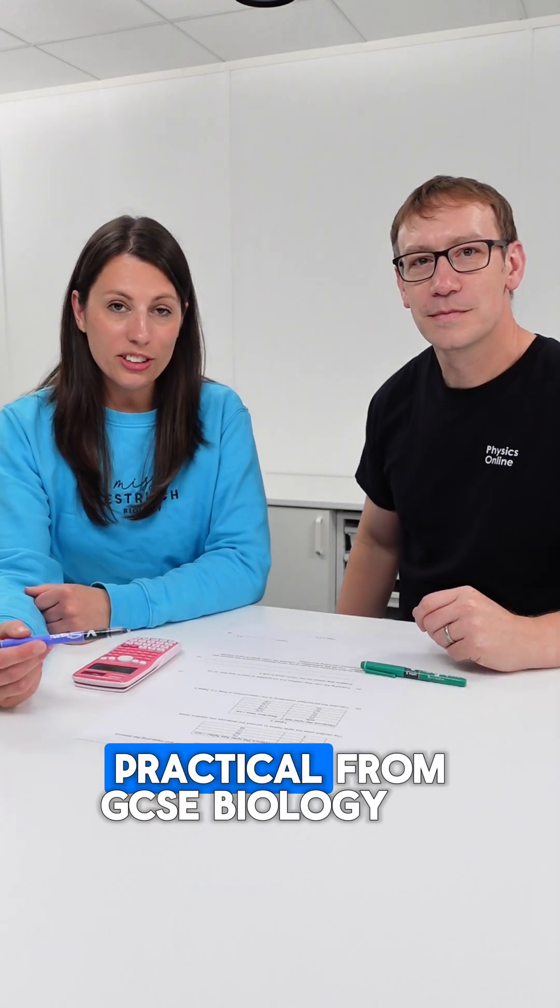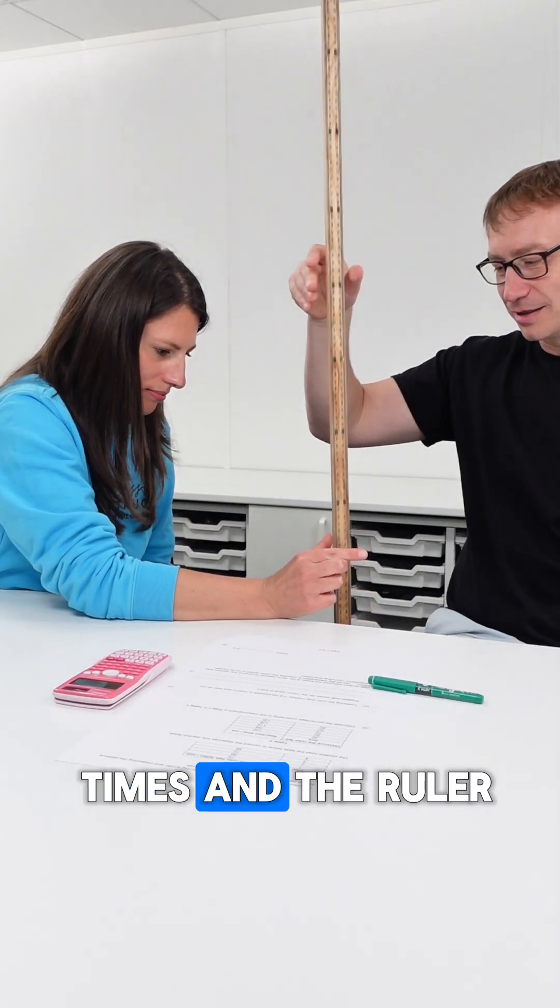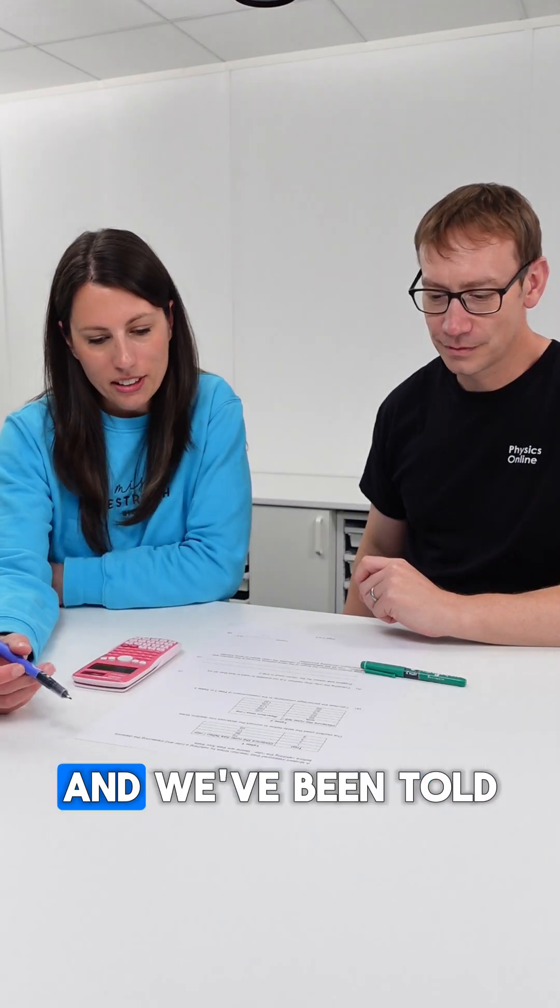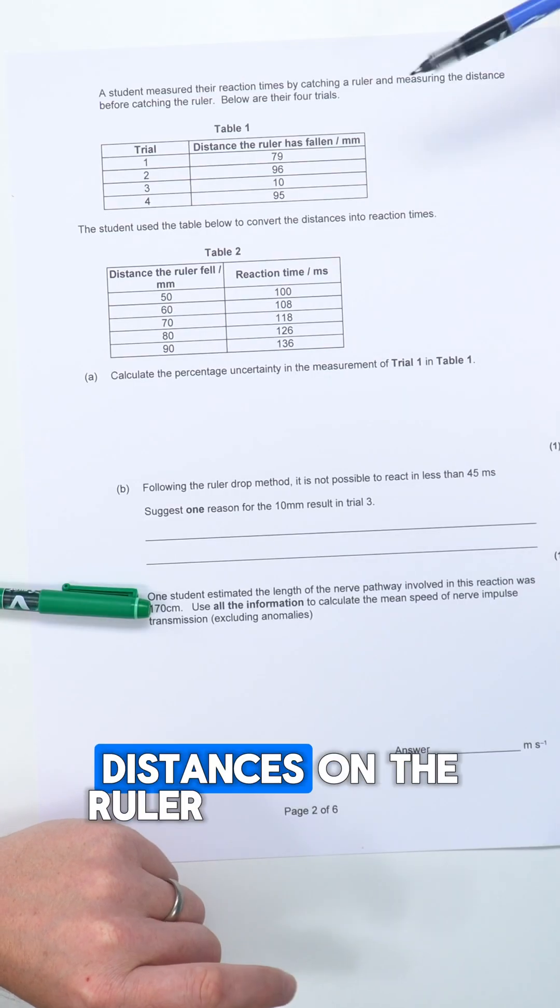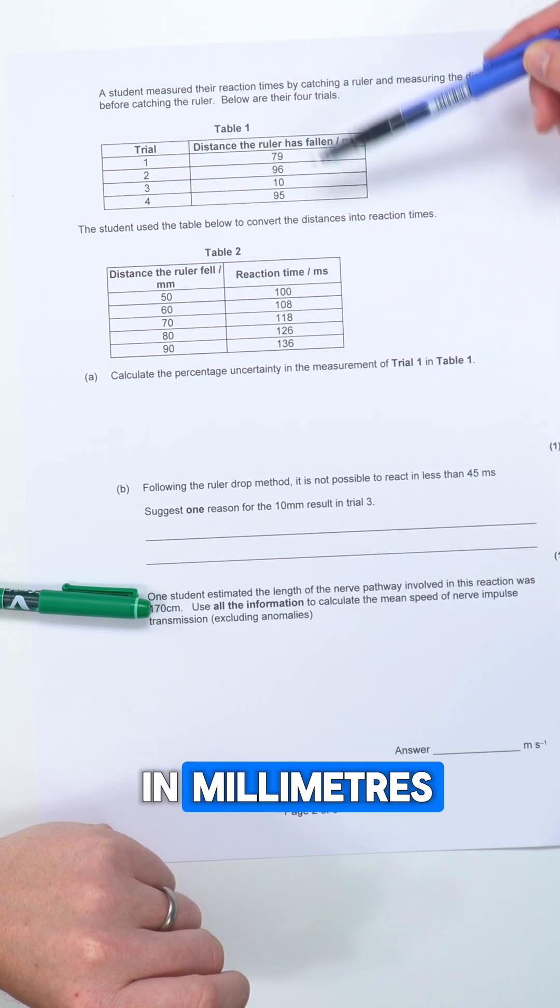This is that required practical from GCSE biology where it's the reaction times and the ruler drop and catching it. And we've been told that a student has done that four times and these are the distances on the ruler before they caught it in millimeters.